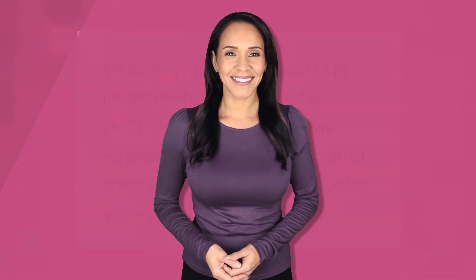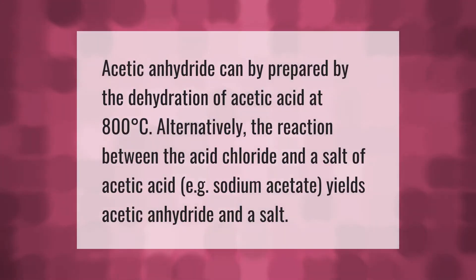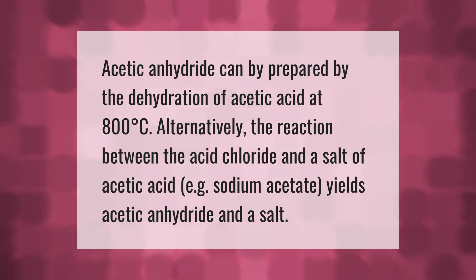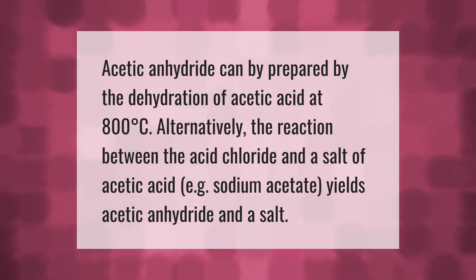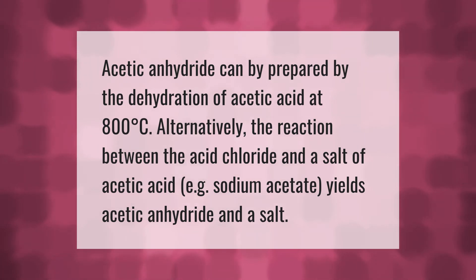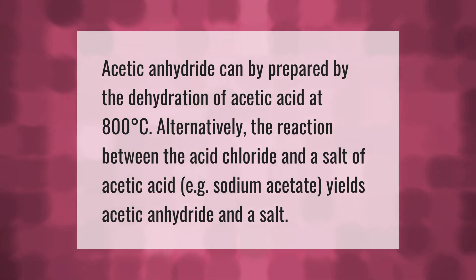Acetic anhydride can be prepared by the dehydration of acetic acid at 800 degrees Celsius. Alternatively, the reaction between the acid chloride and a salt of acetic acid, e.g. sodium acetate, yields acetic anhydride.